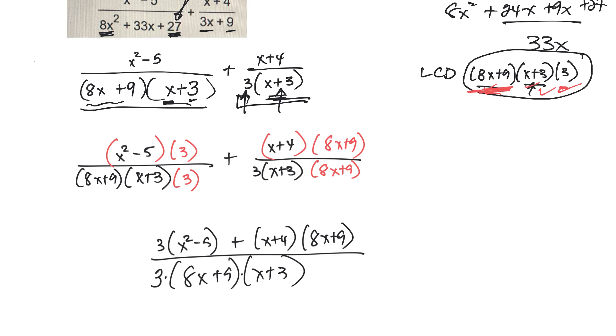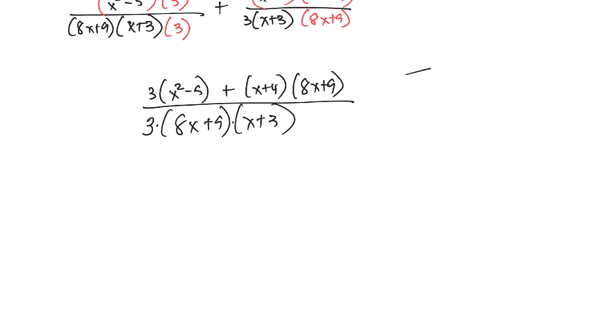Now, I probably can simplify that stuff on top. So I'm going to distribute that through. So it will be 3x squared minus 15, plus,